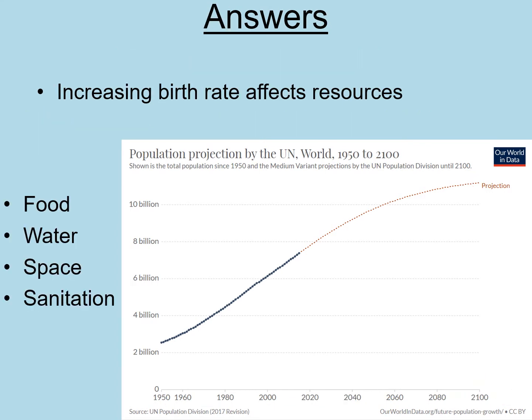As the birth rate increases, that affects the resources we need. The main resources are food, water, space for living or growing crops, and sanitation — a way of getting rid of our waste. The main one we're going to focus on today is food. So as the birth rate increases, how are we going to make sure there's enough food for everyone?